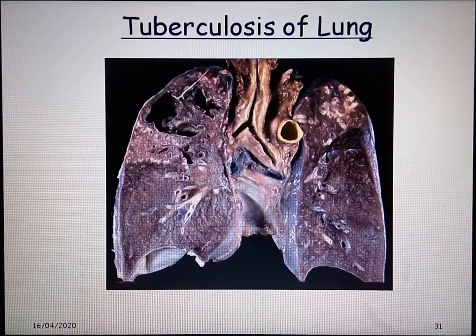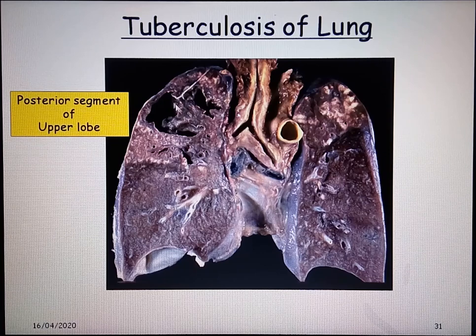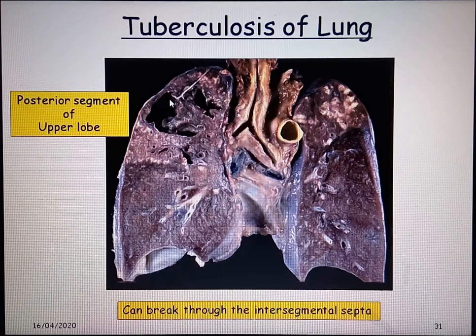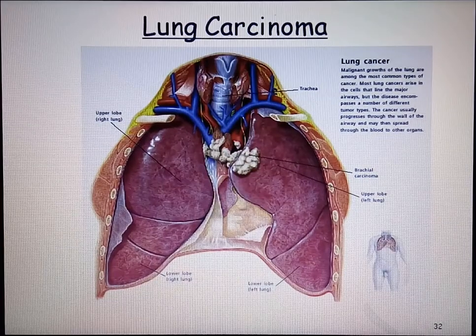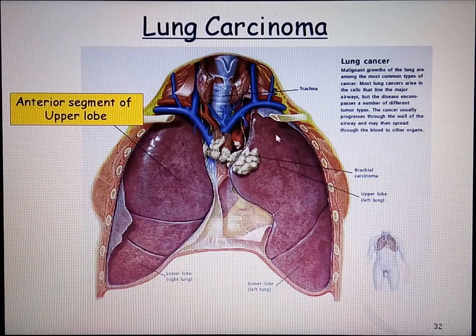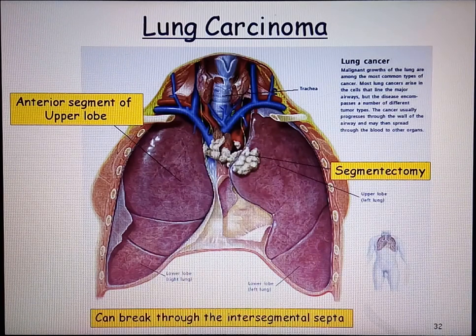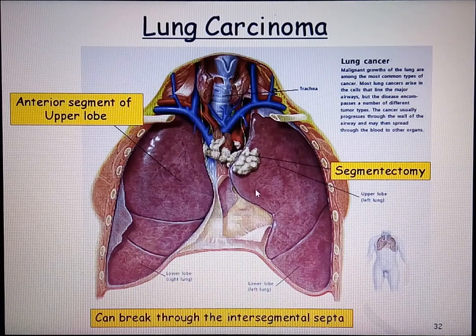Tuberculosis of the lung most commonly affects the posterior segment of the upper lobe. The tuberculosis bacilli can break through the intersegmental septa, damage lung tissue and cause cavities. Lung carcinoma is most frequently seen in the anterior segment of the upper lobe; depending on the stage, segmental resection or segmentectomy can be performed, though cancer cells can break through the intersegmental septa and spread widely through lymphatic channels and the blood vascular system.